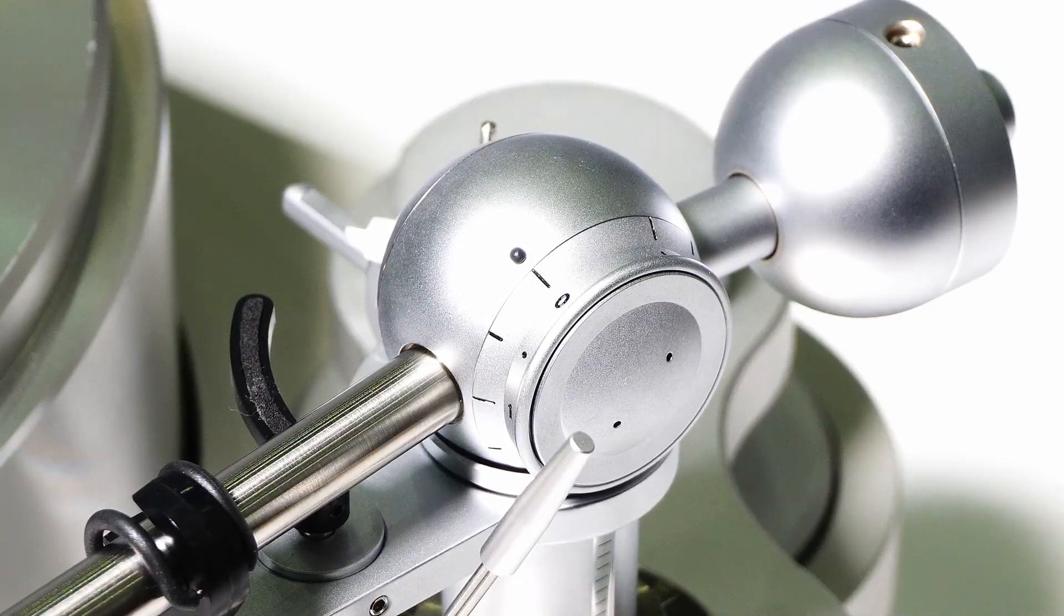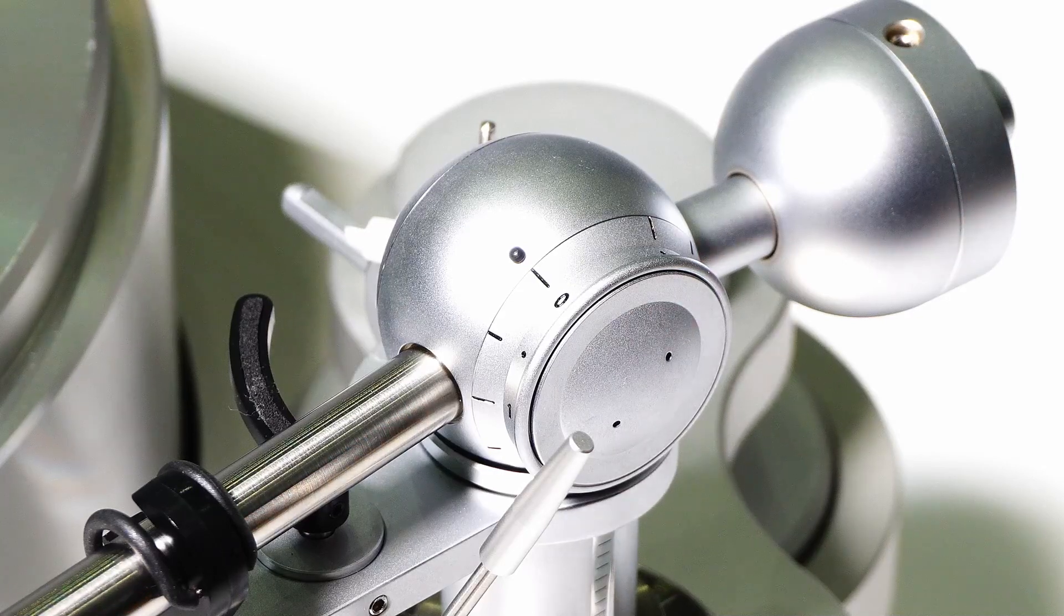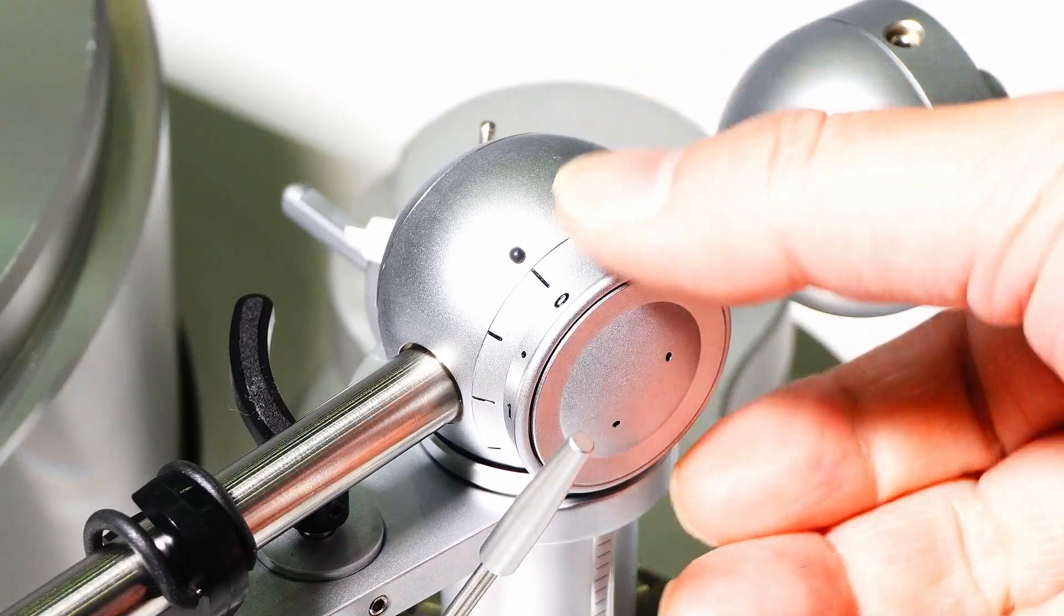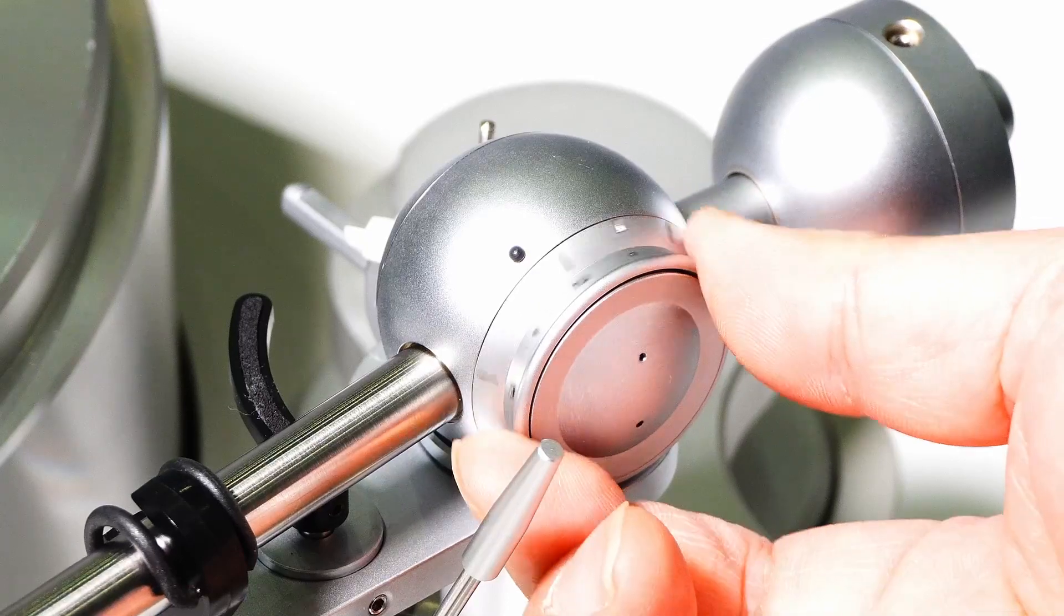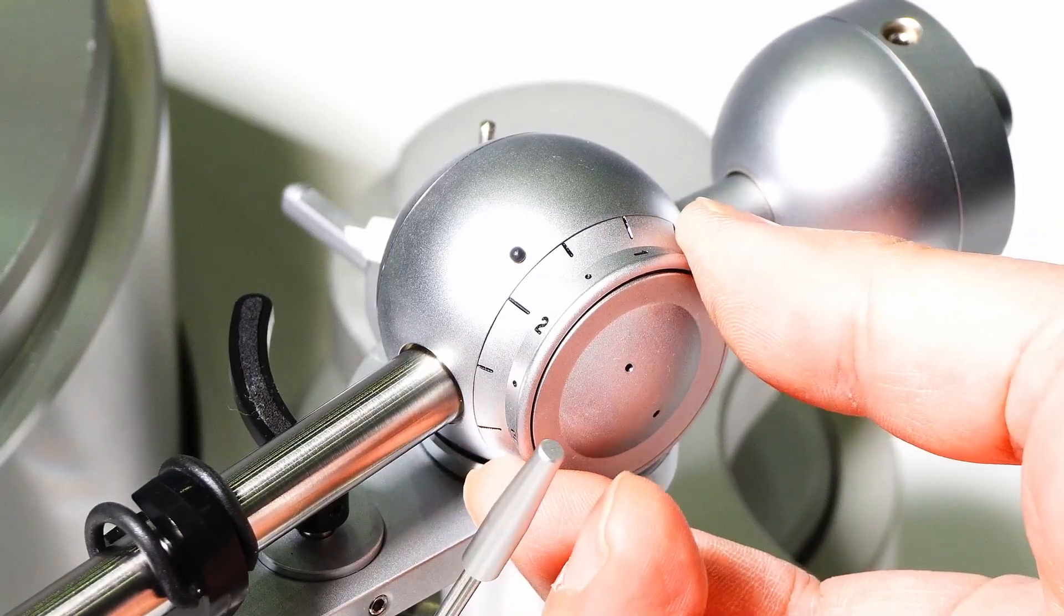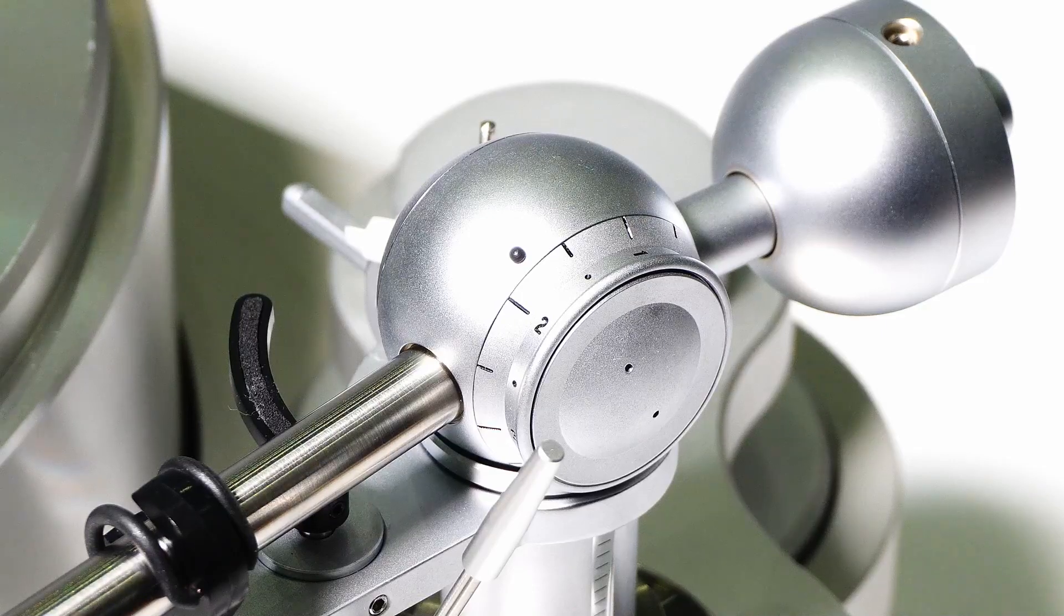Apply tracking force. Turn the tracking force gauge to increase the tracking force. The value inscribed on the scale will be applied to the stylus tip. Up to 5 grams of tracking force can be applied. Even though there are steps at 0.25 gram increments, the applied tracking force can also be set to values between steps.